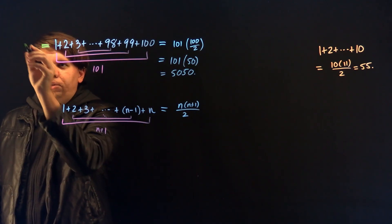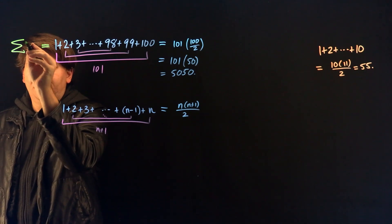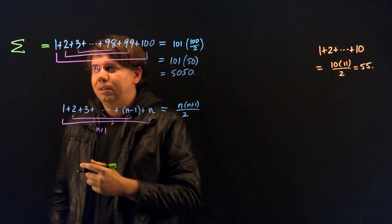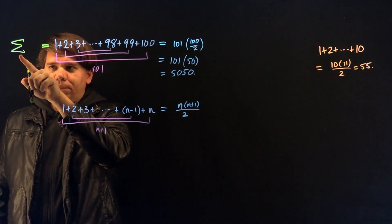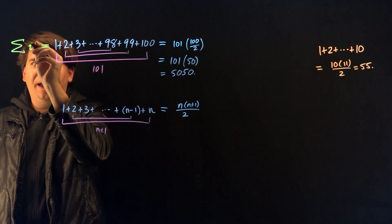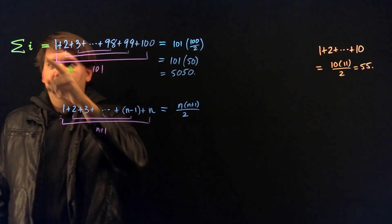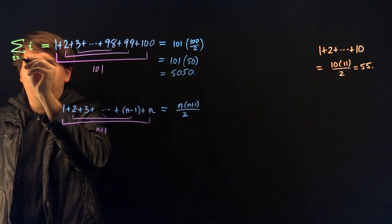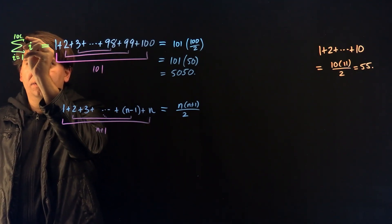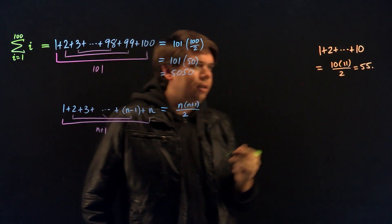we can use this summation notation using the Greek letter sigma, capital sigma for sum. We're going to say, I want to sum, sum letter i, where i is just an index, a counter,